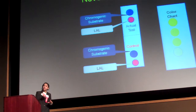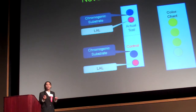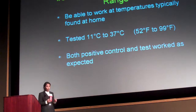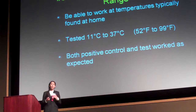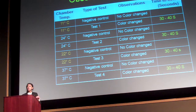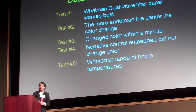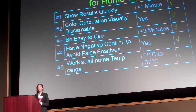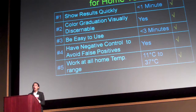The consumer would dip the test into their salad water, creating a bridge between the two spots, resulting in a color change if endotoxin is present. I also wanted to make sure my test worked at a variety of temperatures, since I don't know when or where it will be used. I tested it at different temperatures and found it worked consistently, with my negative controls not changing color. The goals I set — quick results, a color graduation scale, ease of use, an embedded negative control, and functionality at various home temperatures — were all met.